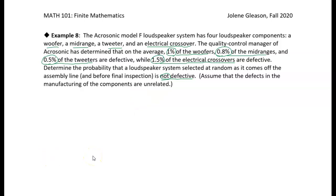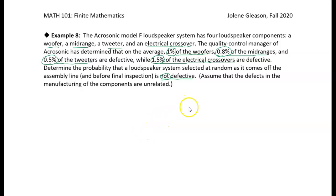Think about where the stochastic events are. We have to select a woofer — it's either going to be defective or not defective. We have to select a mid-range — defective or not defective. We have to select a tweeter — defective or not defective. We also select a crossover, and there's a 1.5% chance it will be defective. So our stochastic events are: choose a woofer, choose a mid-range, choose a tweeter, choose an electronic crossover.